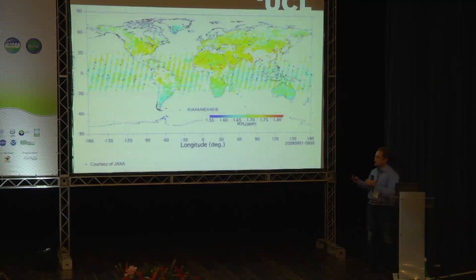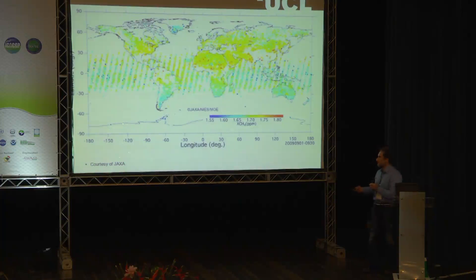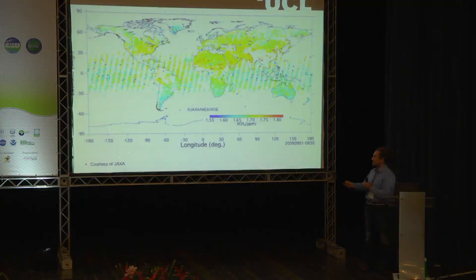Mapping methane is not new. This is some data shown from GOSAT taken a couple of years ago, a month average. Here we can see methane especially high around bits of China and bits of India. What is new is the ability to actually tell whether these are from industrial sources or cities, or biological sources that we might see more in the rainforests.